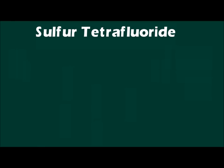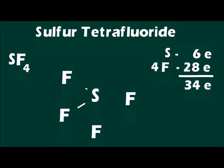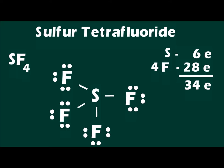The last Lewis structure we will be looking at is sulfur tetrafluoride. This molecule has 34 valence electrons. After drawing out the Lewis structure and distributing the electrons appropriately, we have two electrons remaining. Sulfur is an element located beyond the second row of the periodic table, which means that it can have an expanded octet. An expanded octet is called hypervalence, or hypercoordination. We can place the two remaining electrons on the central sulfur atom to complete the Lewis structure.